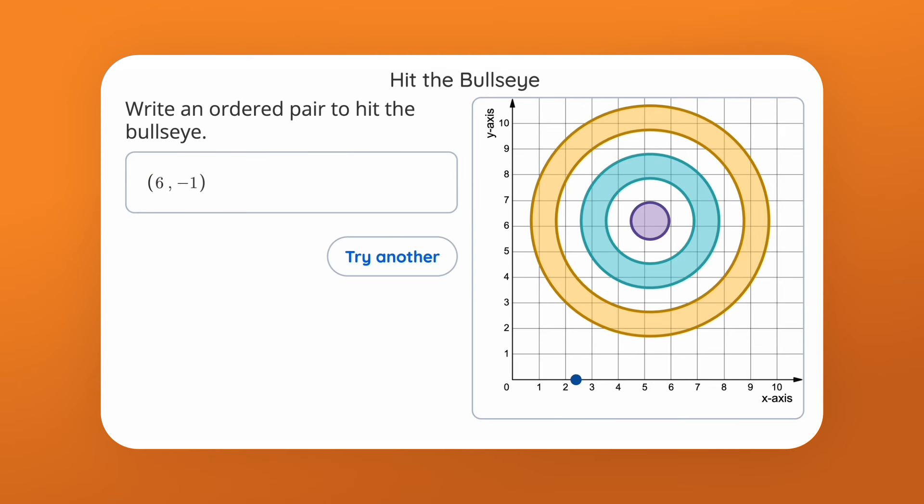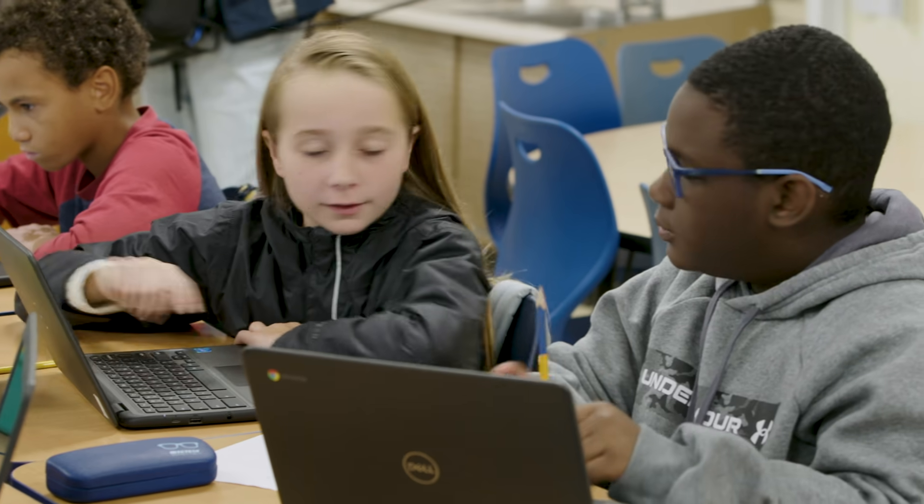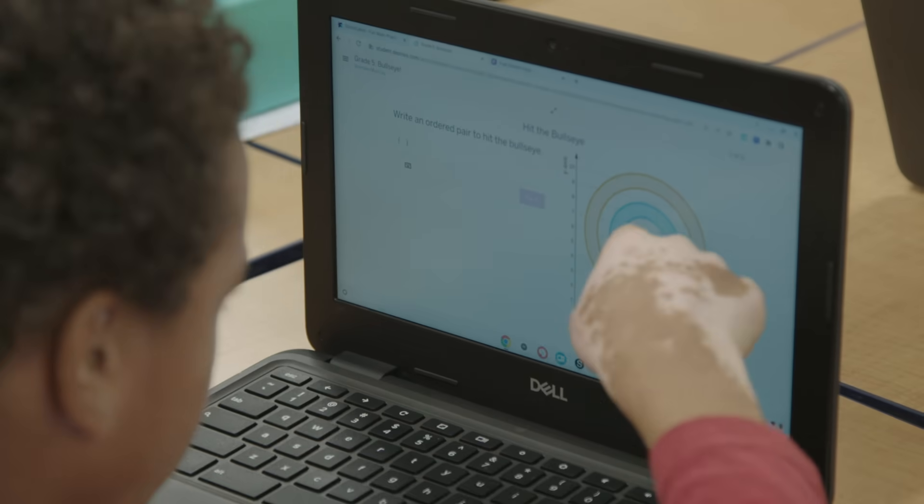If they were thinking that this ordered pair would work and then it went ahead and threw the target and it didn't go where they expected it to, then they were like, okay, well I misunderstood that. They could ask a partner for help. They could fix it on their own and do some trial and error problem solving on their own.